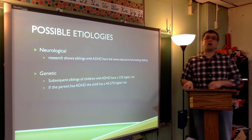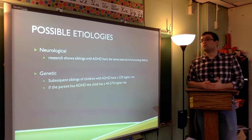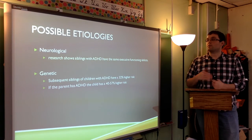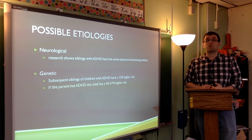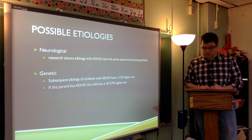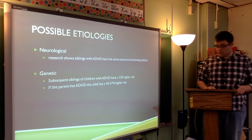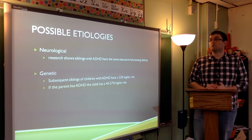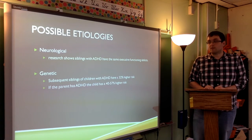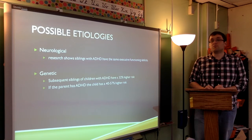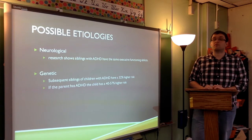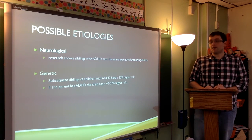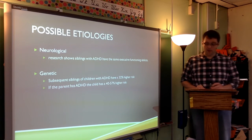There are several possible etiologies for ADHD. One could be neurological — research of siblings has shown that siblings with ADHD have the same executive functioning deficits, suggesting a neurological connection in families where ADHD is present. There is also a possible genetic etiology: subsequent siblings of children with ADHD have a 32% higher risk of also having ADHD. And if a parent has ADHD, children of those parents have a 40 to 57% higher risk of having ADHD as well.